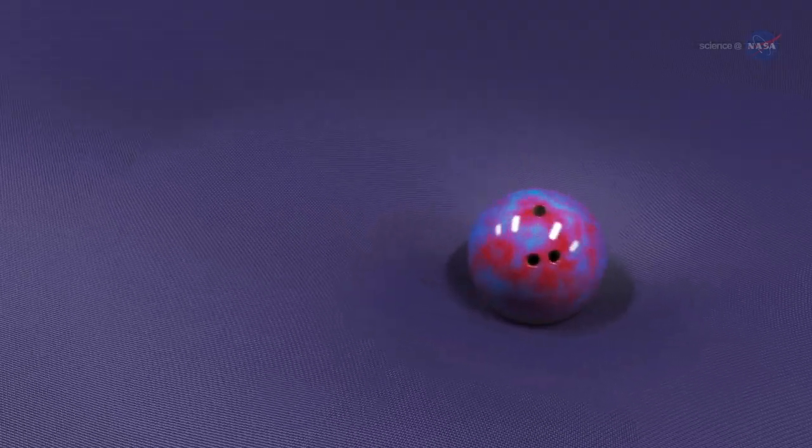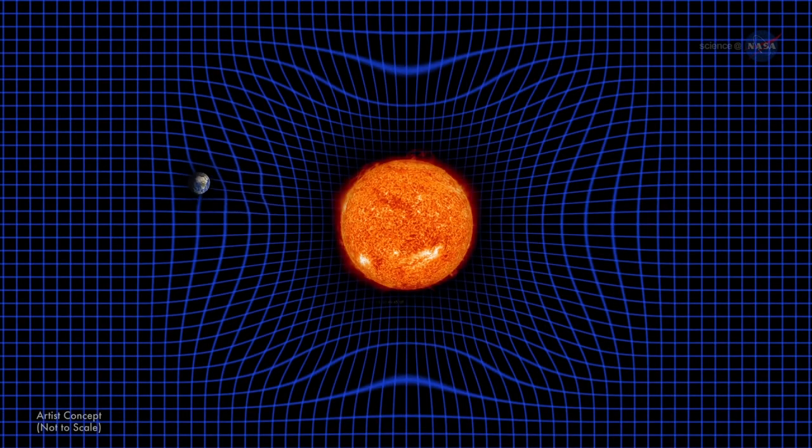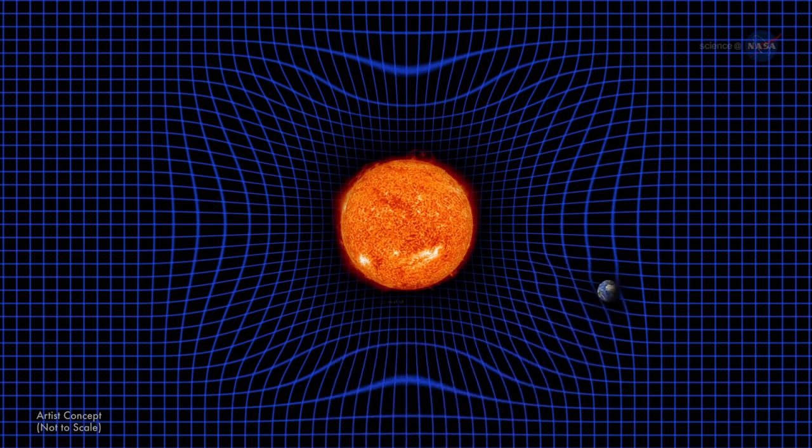Remember the physics analogy of the trampoline with a bowling ball in the middle? Like that ball, which gently distorts the trampoline's canvas, the Sun warps the smooth canvas of spacetime, enough to make planets move in curved orbits.